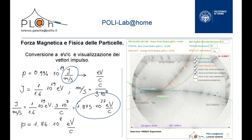By clicking the box further below, you will visualize the total final momentum, given by the sum of the two vectors — the green one and the orange one. In this way, you will have the opportunity to inquire whether the momentum conservation law at sub-nuclear scales still holds.